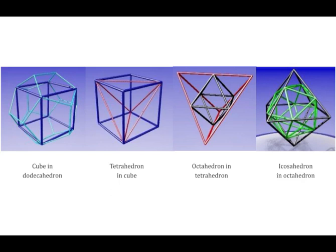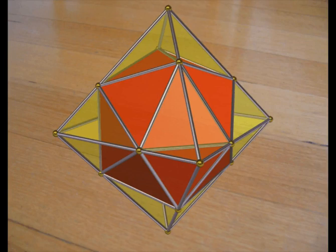Now we move on to the icosahedron, the figure on the right, which fits into the octahedron. As with the octahedron in the tetrahedron, some triangles of the icosahedron touch its enclosing figure, the octahedron. And some points of the icosahedron lie on the edges of the octahedron. This image shows it better.